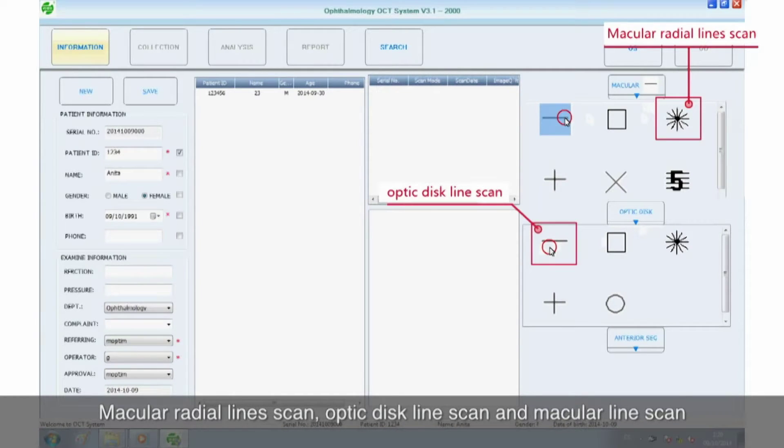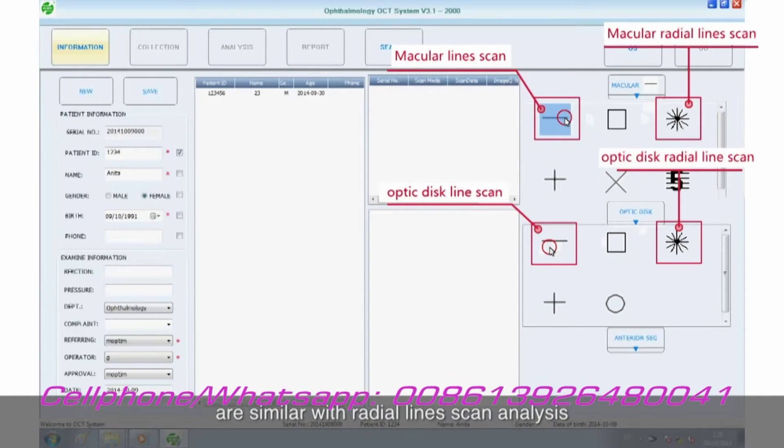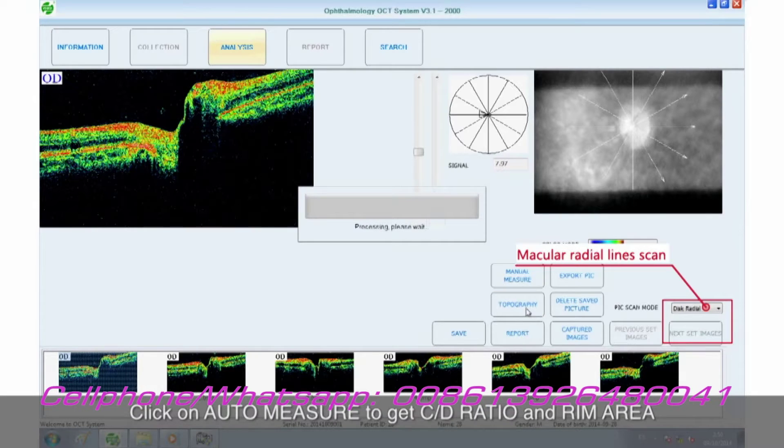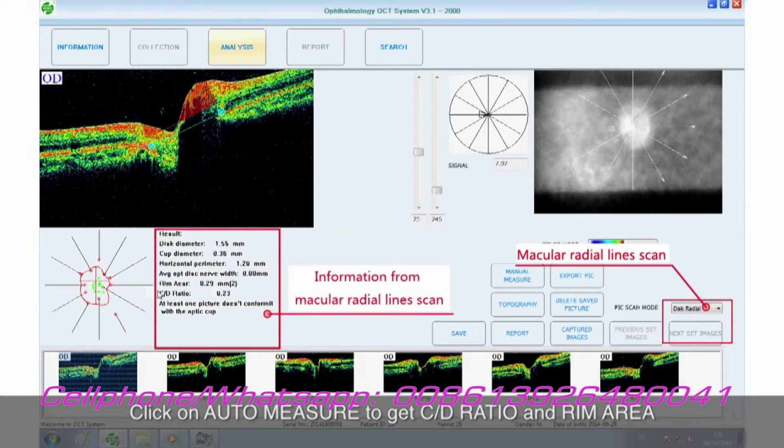Optic disc line scan and macular line scan are similar with radial line scan analysis. Click on Auto measure to get C slash D ratio and rim area.